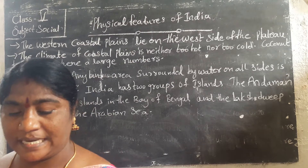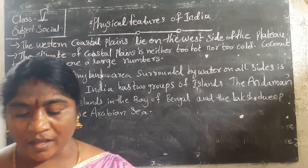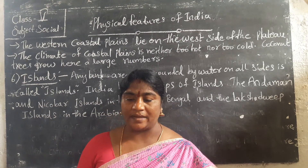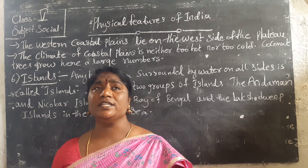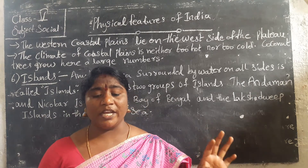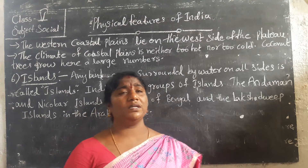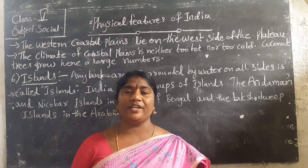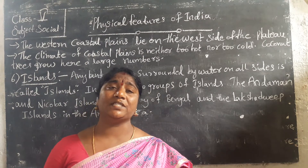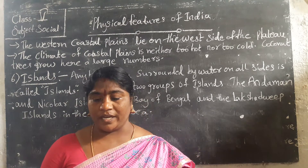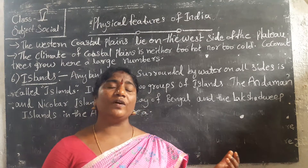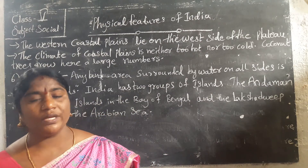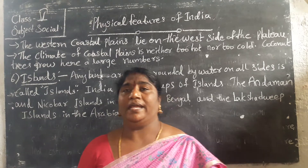Next we have to learn about the third feature — the desert. The Thar Desert is a large area of land that is dry and covered with sand. It receives very little rainfall. The desert is in the northern parts of India and the land covered with sand is called Rajasthan. Few plants and trees grow here because it gets very little water, and the land is not good for farming.